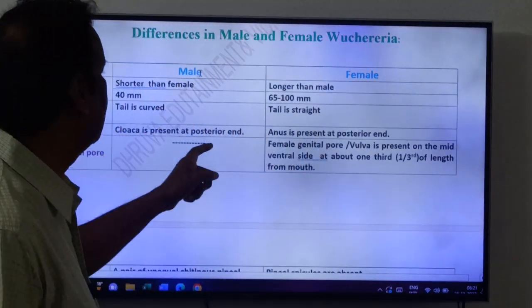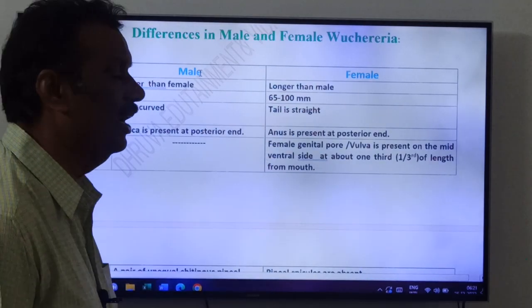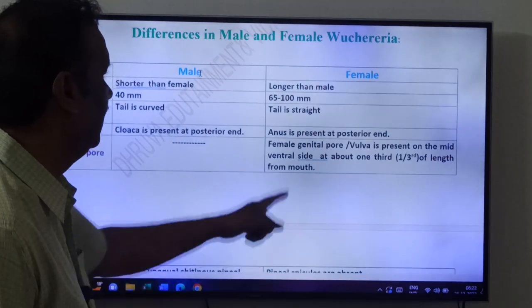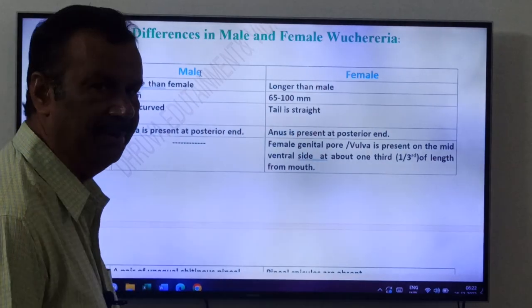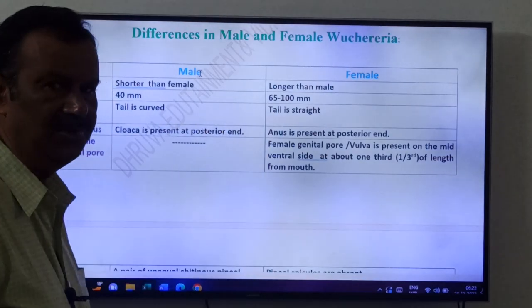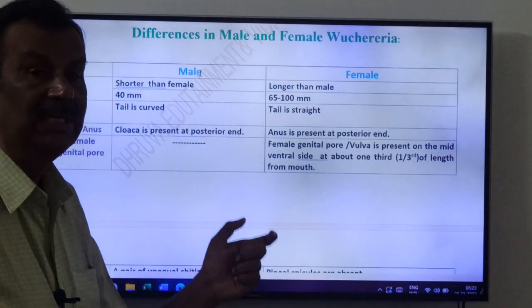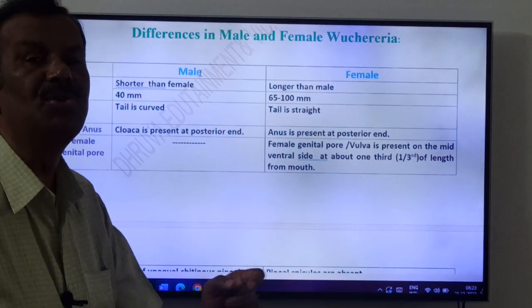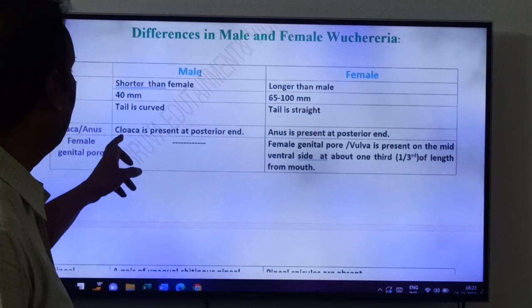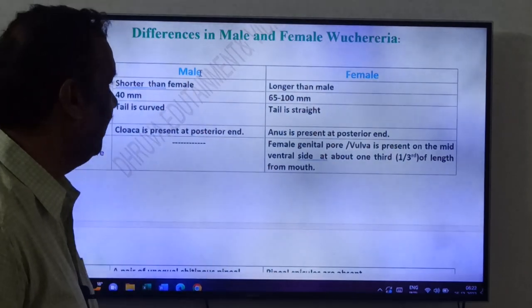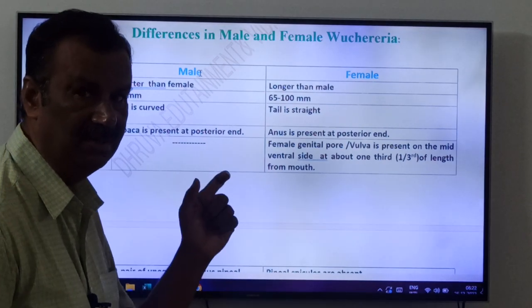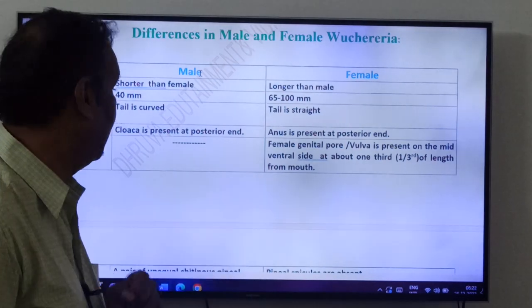Differences between male and female: males are shorter than females. The size of males is 40 mm; females are 65 to 100 mm. Males have a curved tail; females have a straight tail. Cloaca is present at the posterior end of the male; anus is present at the posterior end of the female. Males have cloaca; females have anus.